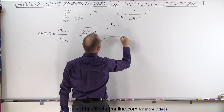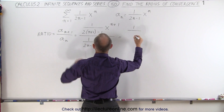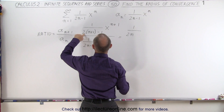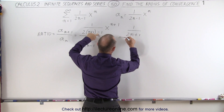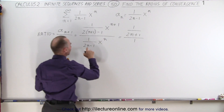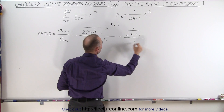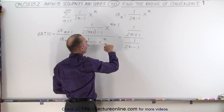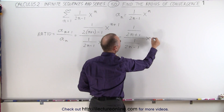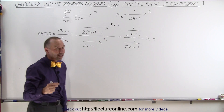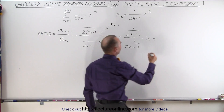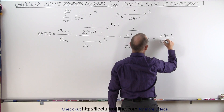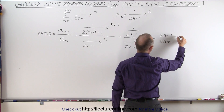Let's simplify the remaining fraction. We get 1 divided by (2n + 2 minus 1), which is (2n + 1), divided by 1 over (2n minus 1). And x to the n+1 divided by x to the n is simply x. When we divide by a fraction it's the same as multiplying by its inverse, so this becomes (2n minus 1) over (2n plus 1) times x.